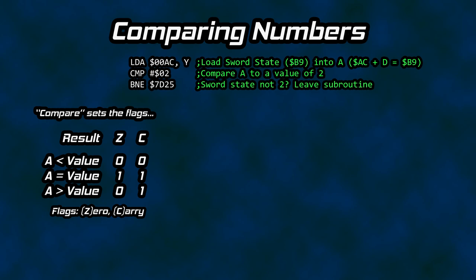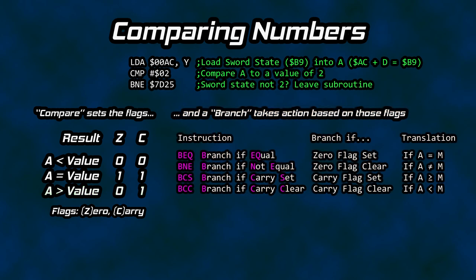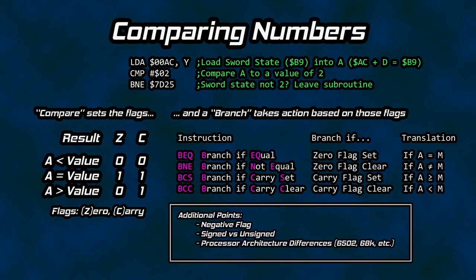A 0 means the flag is clear; a 1 means it is set. For example, if accumulator A was greater than the compared value, then the zero flag is clear and the carry flag is set after the compare operation was executed. Having reference charts to help wrap your head around using CPU flags when comparing numbers is certainly useful, but it does take a bit of practice to get used to this approach. Hopefully this much alone helps explain the tag-team relationship between compare and branch statements by way of CPU flags.